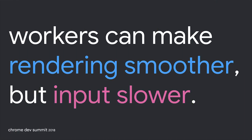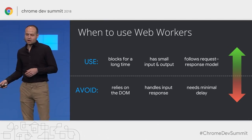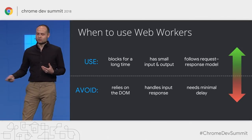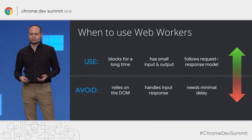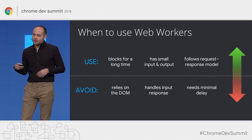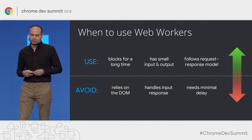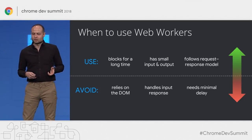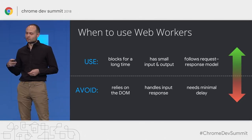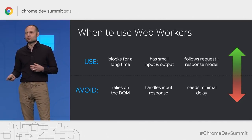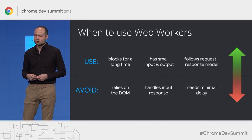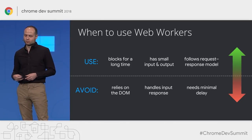Workers might be able to make your rendering smoother, but they might do it at the expense of a bit of input delay. There is no perfect rubric for when to use workers, but there are a couple of hints: if you have code that blocks for a long time, code with small inputs and outputs, or something that follows a simple request-response model, you might be in a position to start with workers.